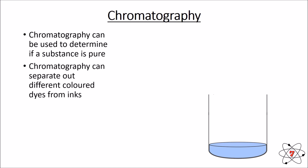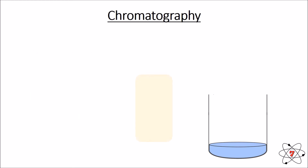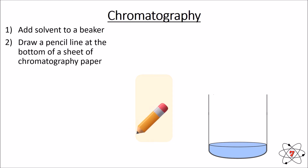Another way we can determine purity is to use a technique called chromatography. Chromatography can separate different colored dyes from their inks, and can also be used to identify proteins and amino acids. To test for purity using chromatography, we first add a solvent to a beaker — a solvent is a liquid that can dissolve another substance, such as water or alcohol. We then take a sheet of filter paper and use a pencil to draw a line at the bottom. We use pencil because the graphite is insoluble and will not dissolve in our solvent.